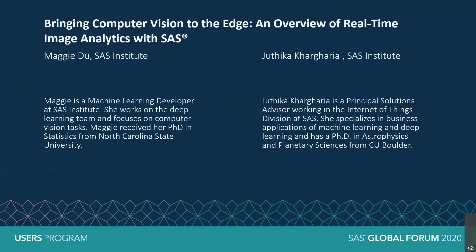My name is Judika Karzaria. I am a principal solutions advisor. I work in the Internet of Things division at SAS, specializing in business applications of machine learning and deep learning. I have a PhD in astrophysics and planetary sciences from University of Colorado at Boulder.